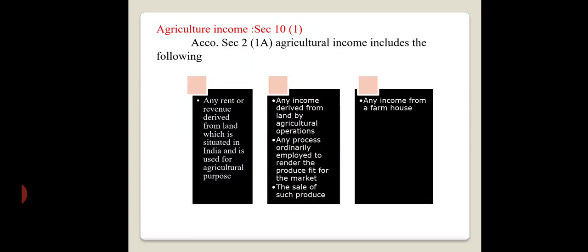The next concept is agricultural income under Section 10 subsection 1. As per Section 10 subsection 1, agricultural income is totally exempted from tax. According to Section 2 subsection 1A, agricultural income includes the following. For calculation of or determining the tax liability, you have to consider that some income is treated as non-agricultural income in certain cases. That's why it is necessary to understand the meaning of agricultural income.